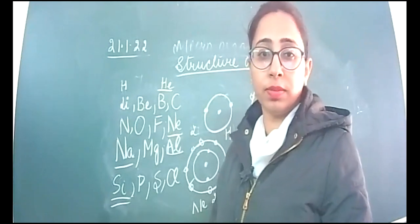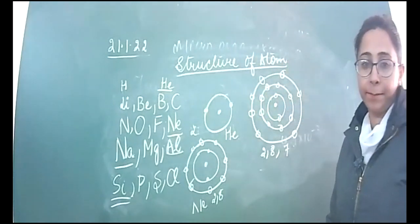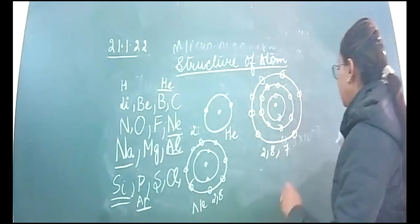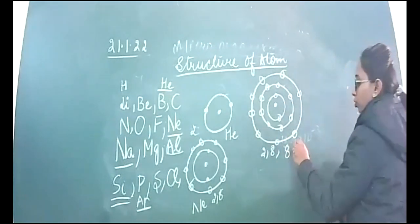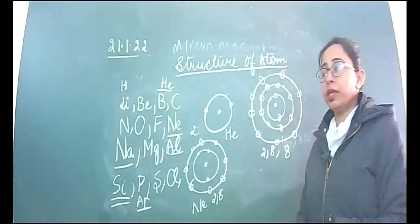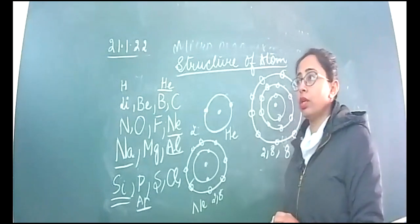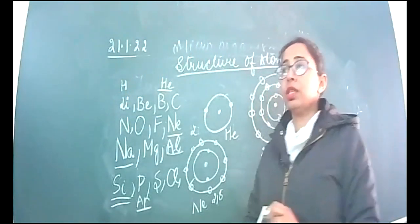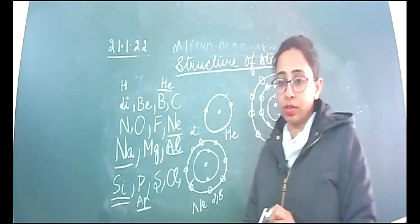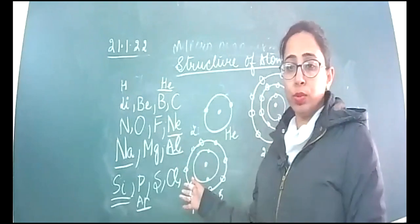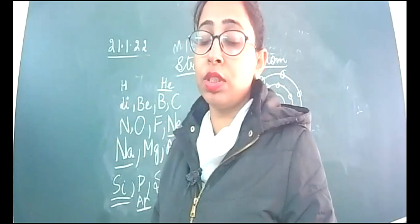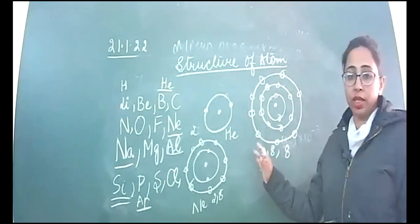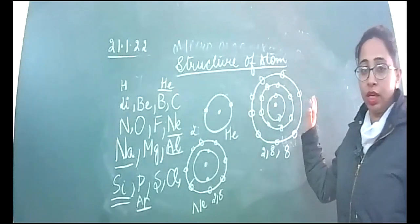After chlorine, the next element is argon. Argon is one more noble gas, which is having eight electrons in the valence shell. But now we know that this shell can accommodate 18 electrons according to Bohr-Bury's rule. We state that the electron fills according to 2N squared. In the third shell there can be 18 electrons. But the next element, potassium, which has 19 electrons, has only one electron in the valence shell.